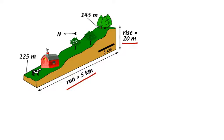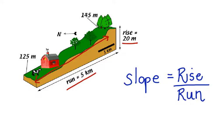Now, we can actually figure out the slope of this hill by looking at the relationship between the rise and the run. The slope of a line is figured out when you divide the rise by the run.